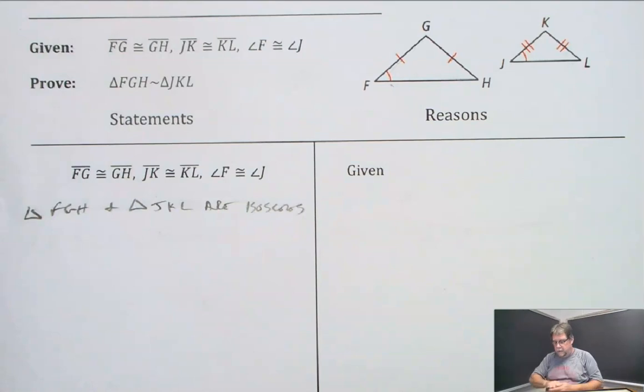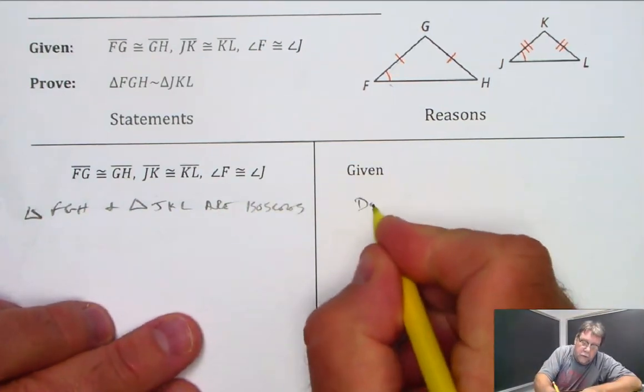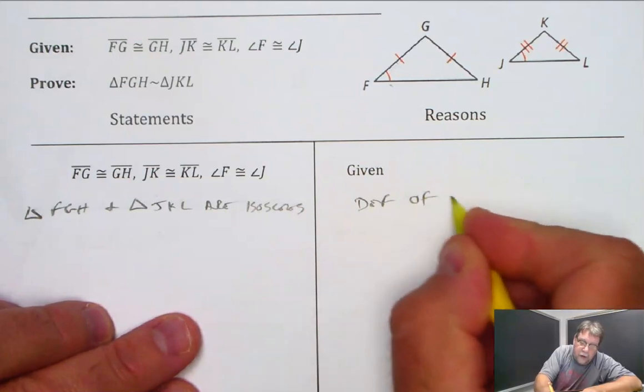And that is basically the definition of what an isosceles triangle is.